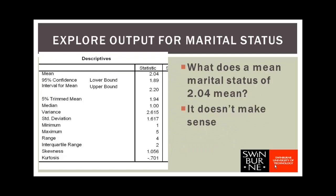Let's have a look at what would happen if we used the explore procedure to produce output for marital status. This would give us a table of descriptive statistics where the mean marital status is 2.04. So what does that mean? If you think about the way marital status was coded, it was 1 for married, 2 for separated, 3 for divorced and so on. So what does a 2.04 mean? Does it mean that on average people were separated? That doesn't sound right. So calculating the mean for a variable like marital status just doesn't make any sense.